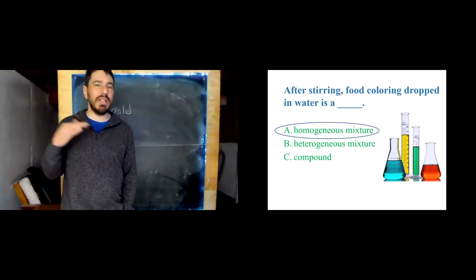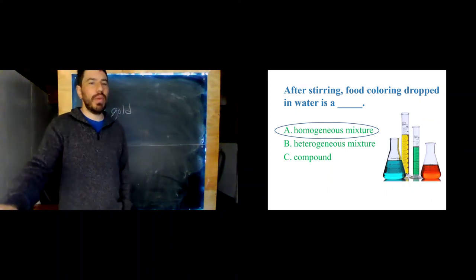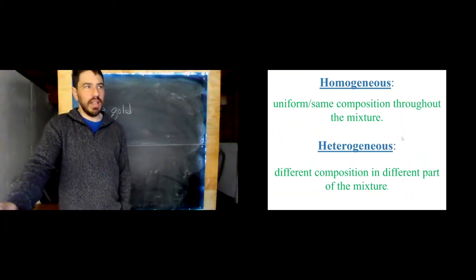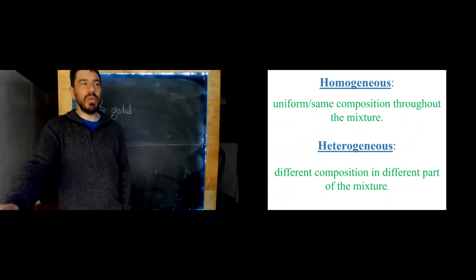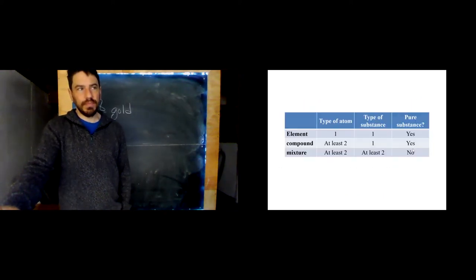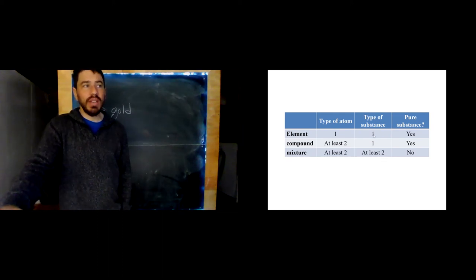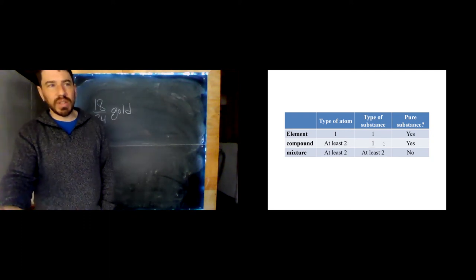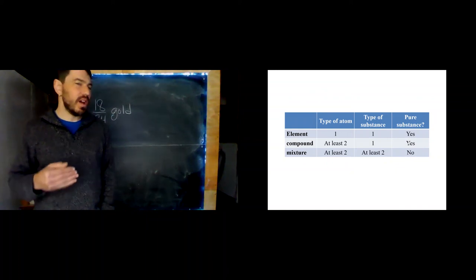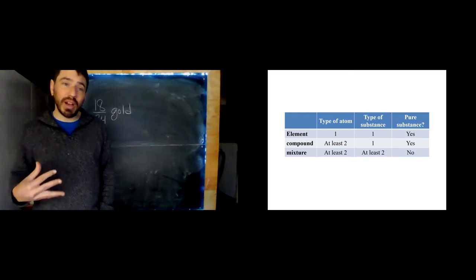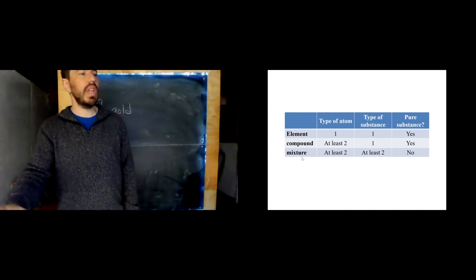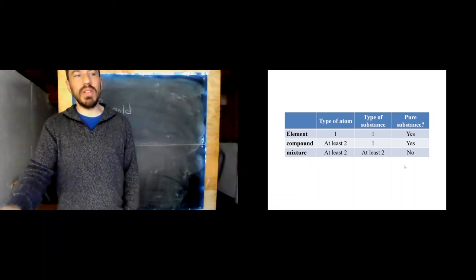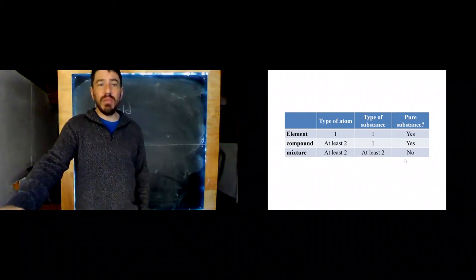Homogeneous means uniform or the same composition throughout the mixture; heterogeneous means different composition in different parts of the mixture. To summarize: an element has one type of atom, is one substance, and is pure throughout. A compound has at least two types of atoms, is still one substance, and is pure throughout — water is a compound, not a mixture of hydrogen and oxygen. A mixture has at least two different types of substances and is not a pure substance.